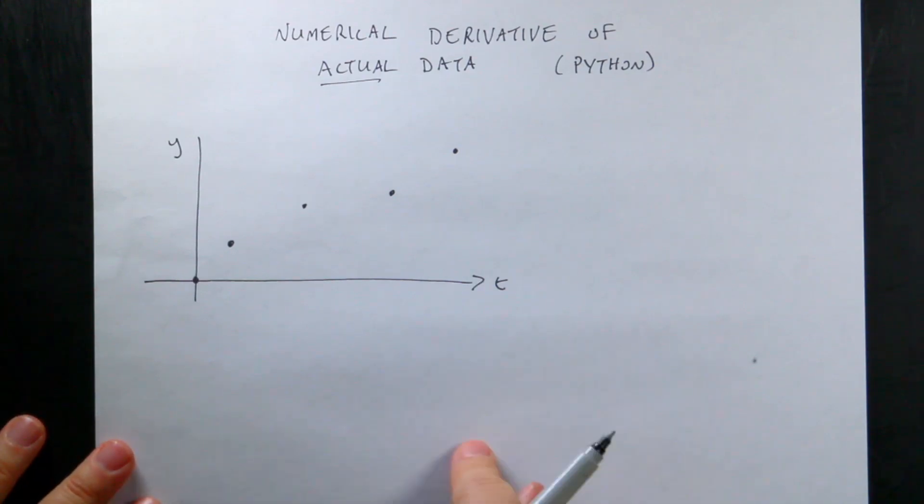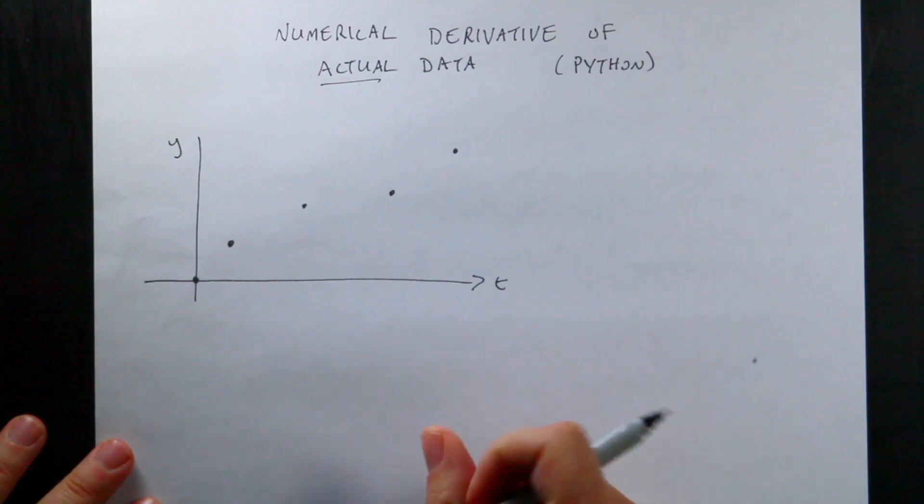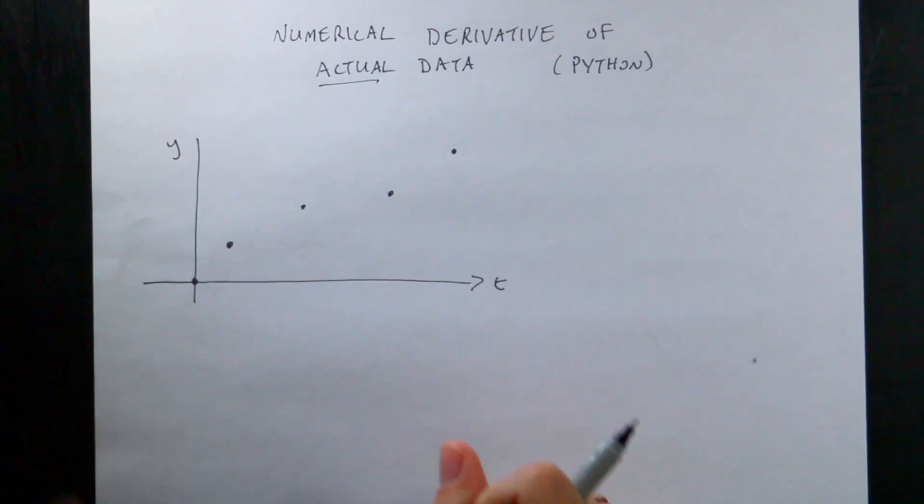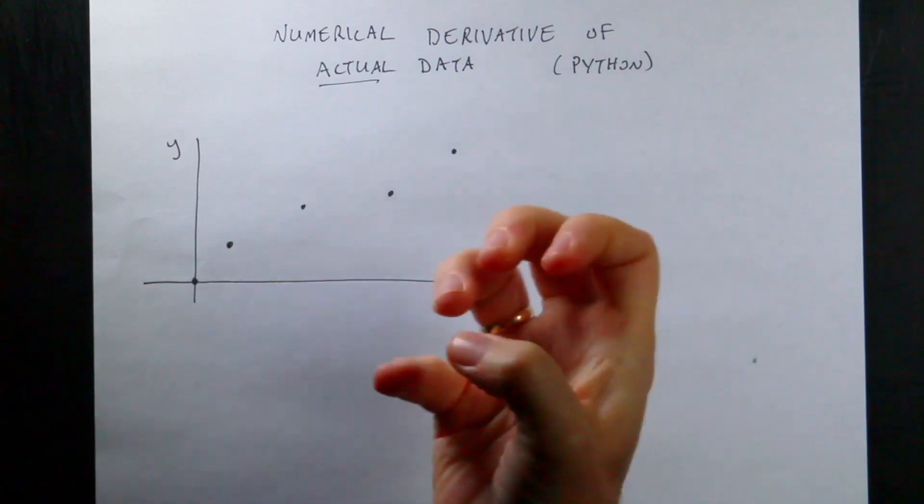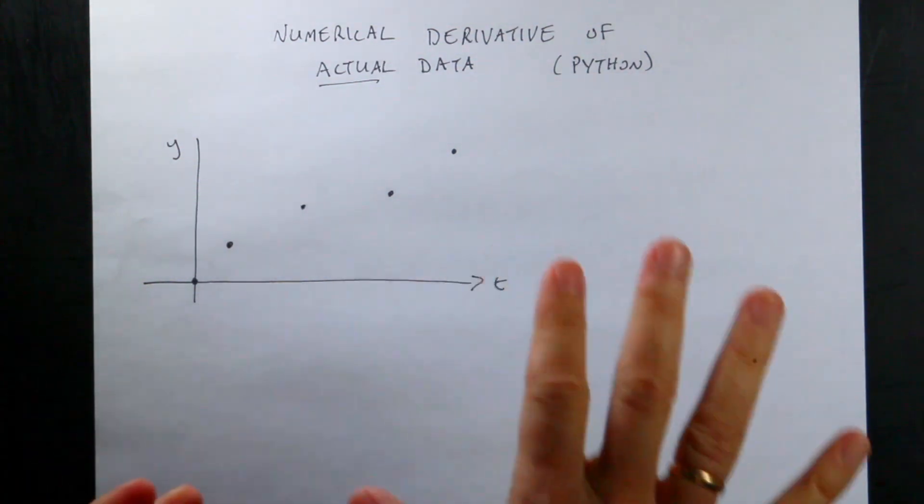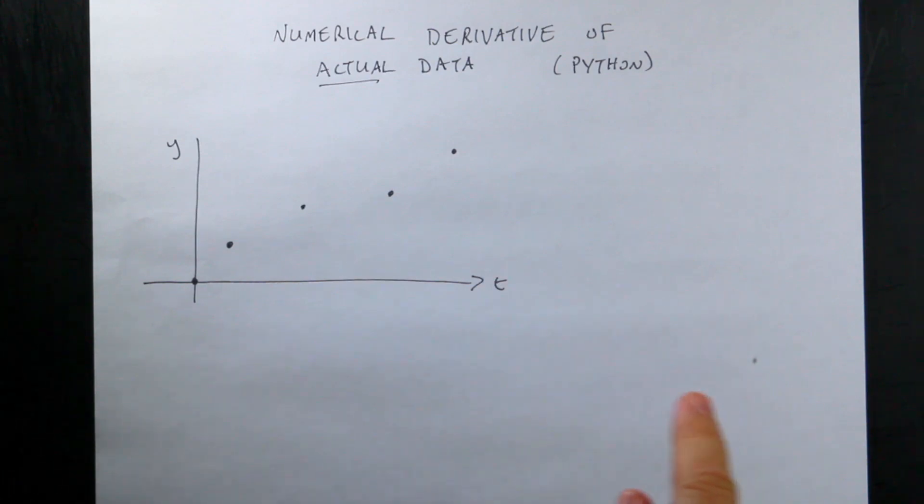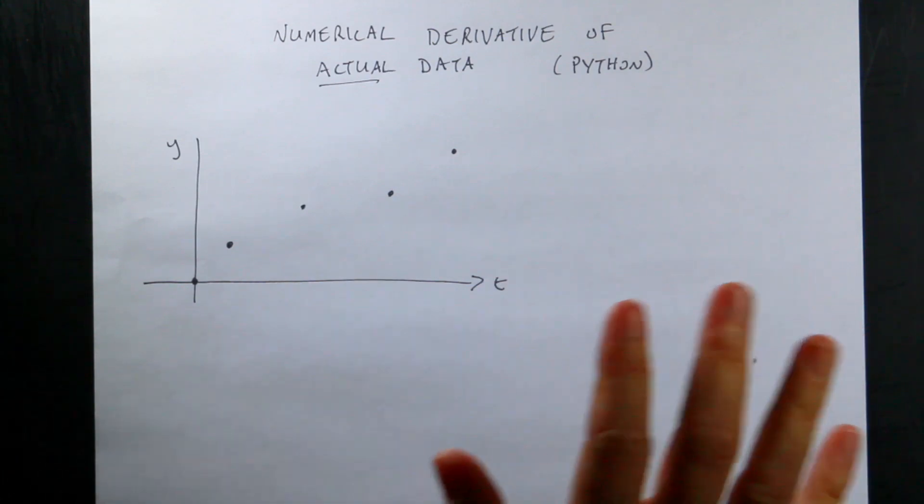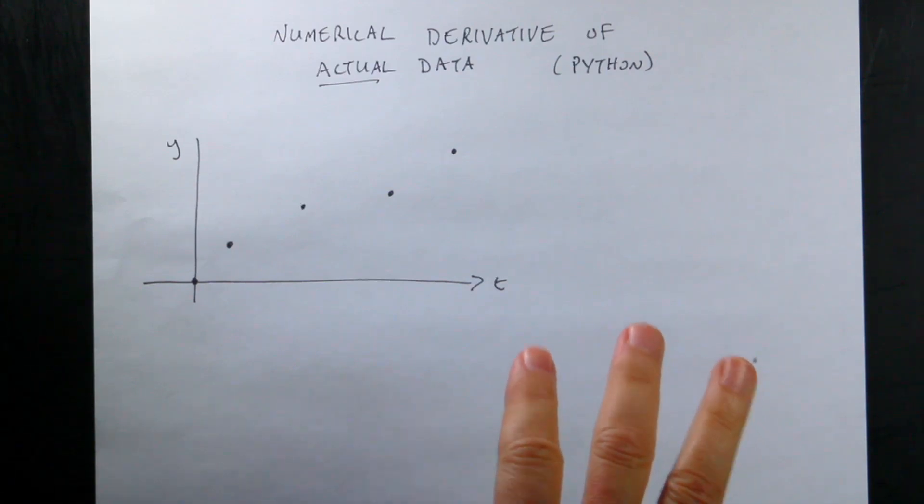Okay, so this is like part two of the video. In my last video, I took a numerical derivative of data, but I made that data in the program too. I want to show you how to do this with actual real data. In this case, what I did was I took a crumpled up piece of paper and I dropped it above a sonic motion detector. So it gave me position versus time. I use Logger Pro from Vernier. I'll put a link down below.